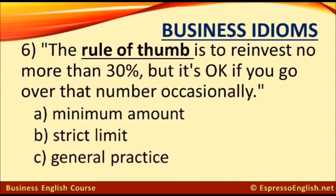Number six. The rule of thumb is to reinvest no more than 30%, but it's okay if you go over that number occasionally. Does 'rule of thumb' mean: A. Minimum amount, B. Strict limit, or C. General practice?